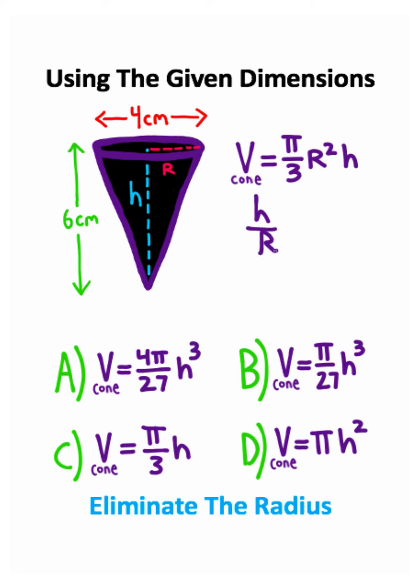So we have h divided by r. The height is 6 centimeters, as can be seen right here, but the radius is actually going to be half of the diameter. The centimeters will cancel, and 6 divided by 2 is 3. So we end up with this relationship where we need to solve for r.